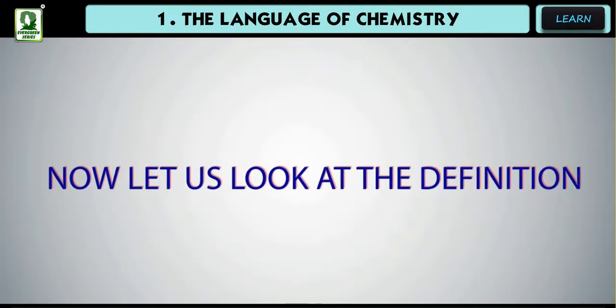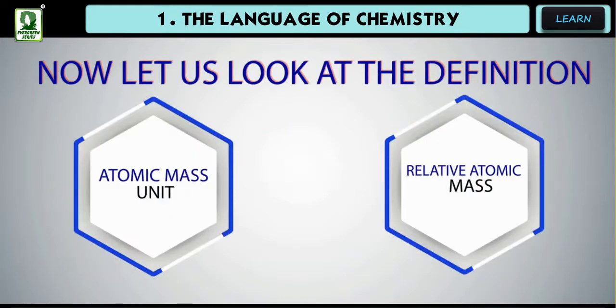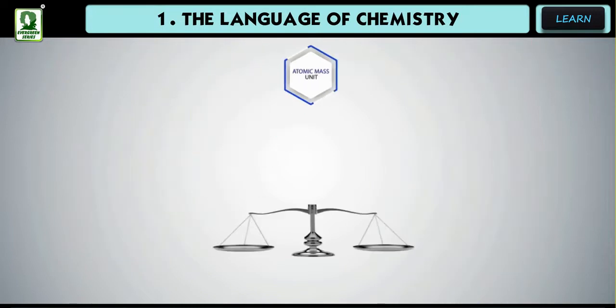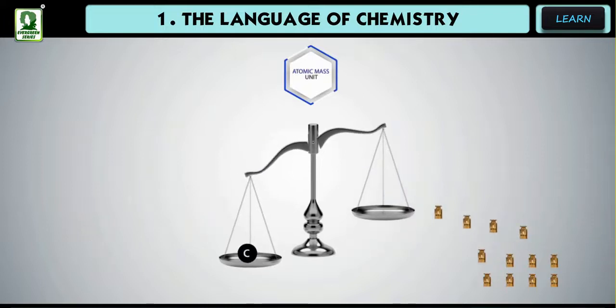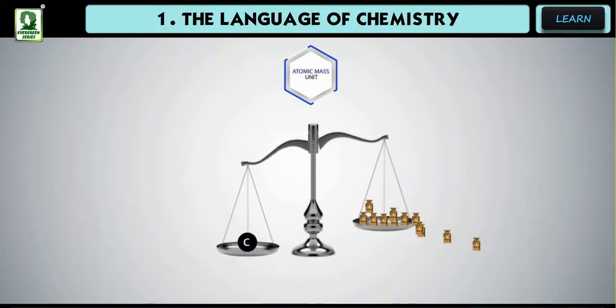Let us now look at the definition of atomic mass unit and relative atomic mass. Atomic mass unit is defined as 1 twelfth of the mass of an atom of carbon C12 taken as 12 amu.